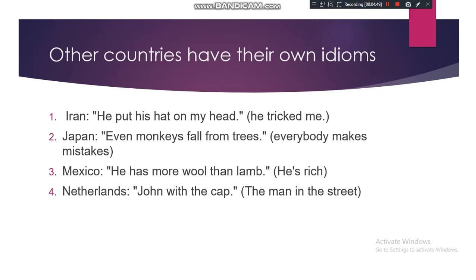Japan: Even monkeys fall from trees — meaning everybody makes mistakes. Mexico: He has more wool than lamb — meaning he's rich. Netherlands: John with the cap — meaning the man in the street.